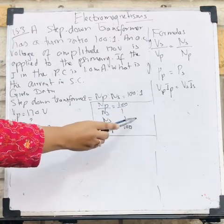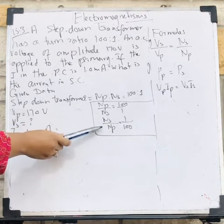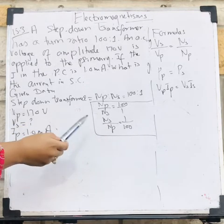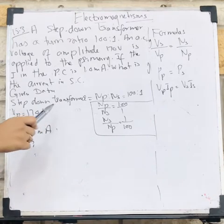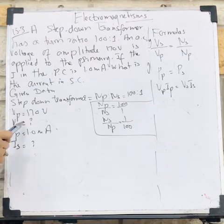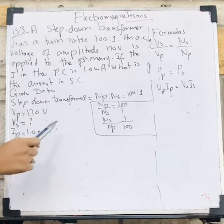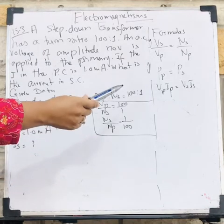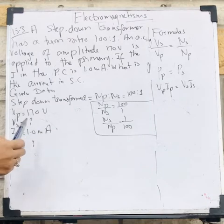In here, just I switch the position of numerator and denominator for simplification. Well, the input voltage is 170 volt Vp, and in there first of all I have to find the output voltage, I mean Vs, because I have to find the Is. And for the Is, I have to know what is the Vs. And the current in the primary is 1.0 milliampere, or 1.0 into 10 to the minus 3 ampere.